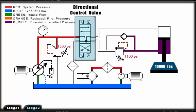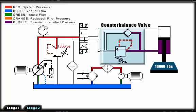Now we look at the counterbalance valve. The counterbalance valve maintains back pressure on the rod side of the cylinder so that the cylinder brings the load down at a controlled rate of speed.